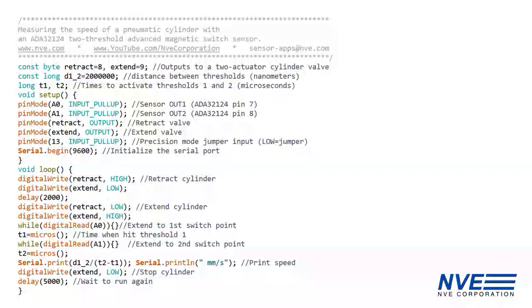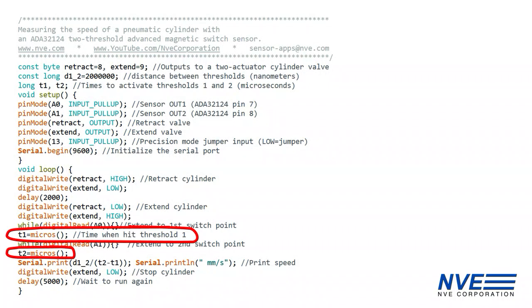Here's the Arduino program. We record when the cylinder hits each of the thresholds and print the speed data to the serial port, where it's plotted with a graphing terminal application.